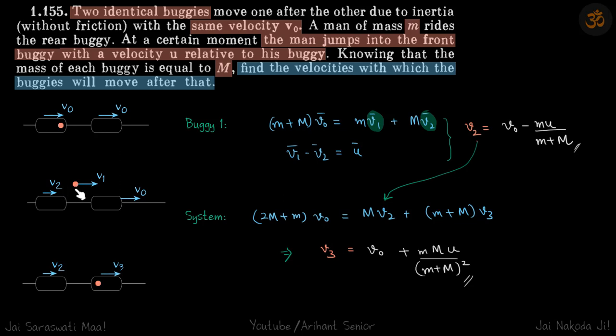Initial momentum is (M+m)v0, final is Mv2 + mv1. It's given that v1 - v2 = u, so we have two equations, two variables. Solving that, we will get v2.